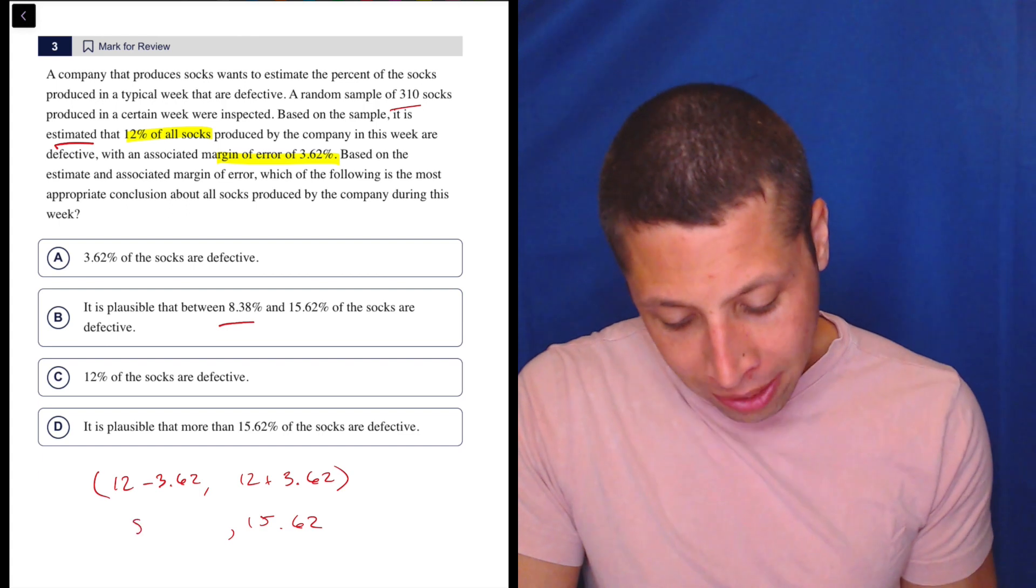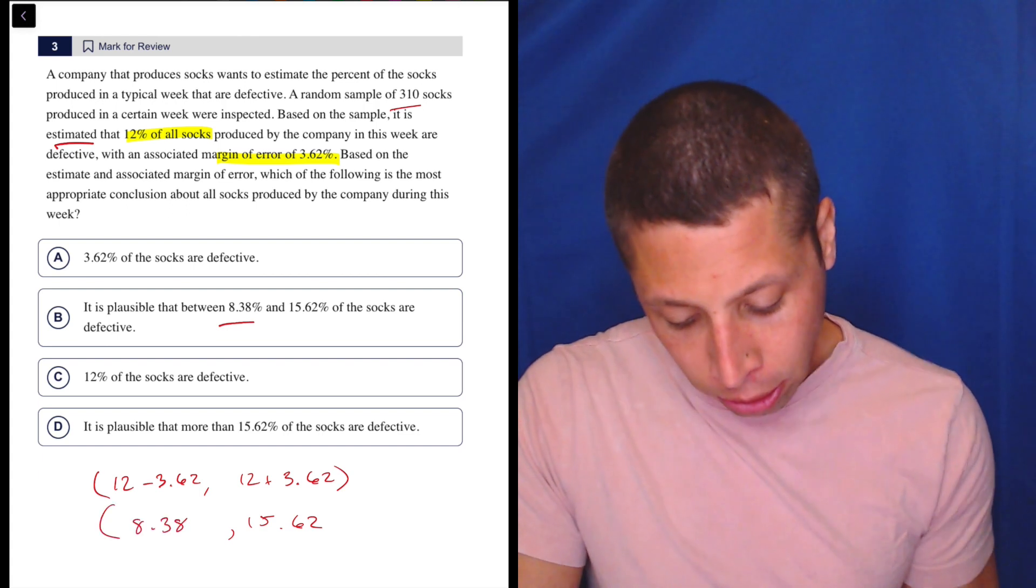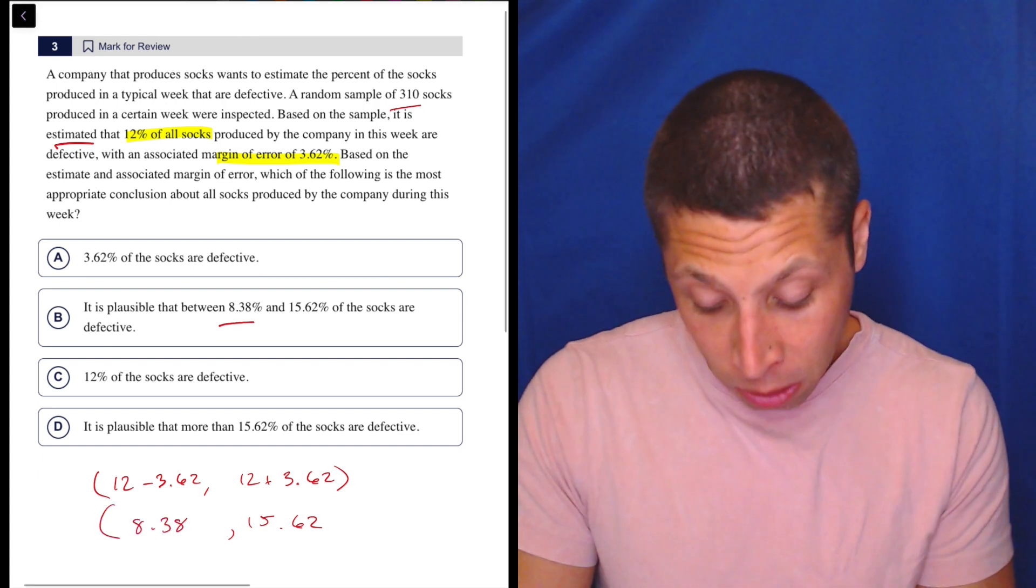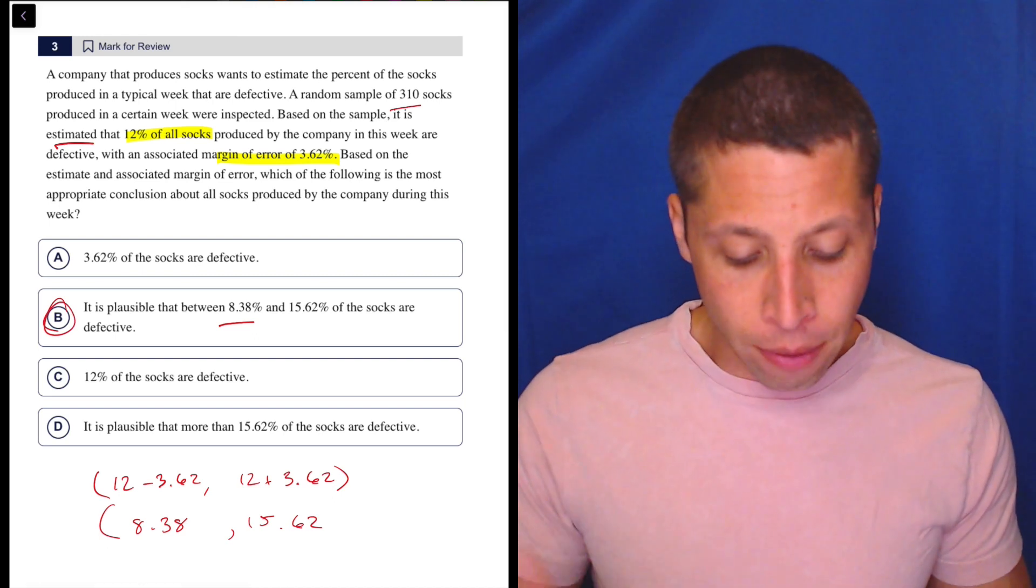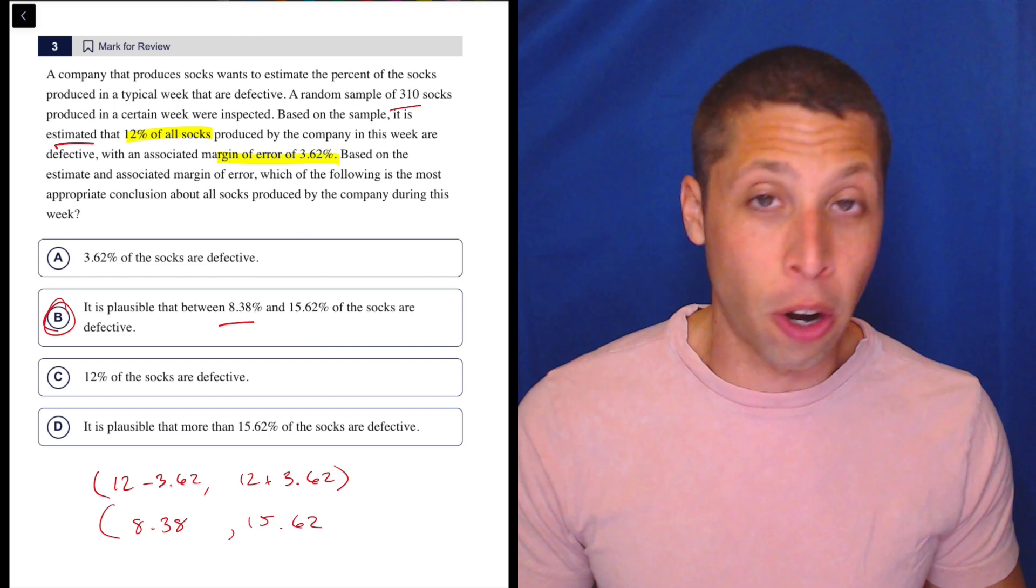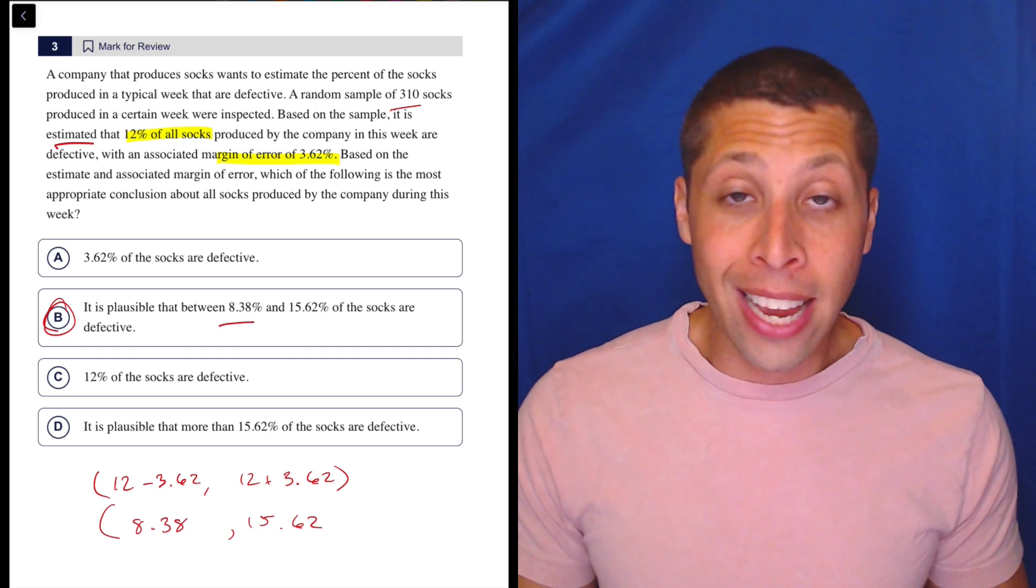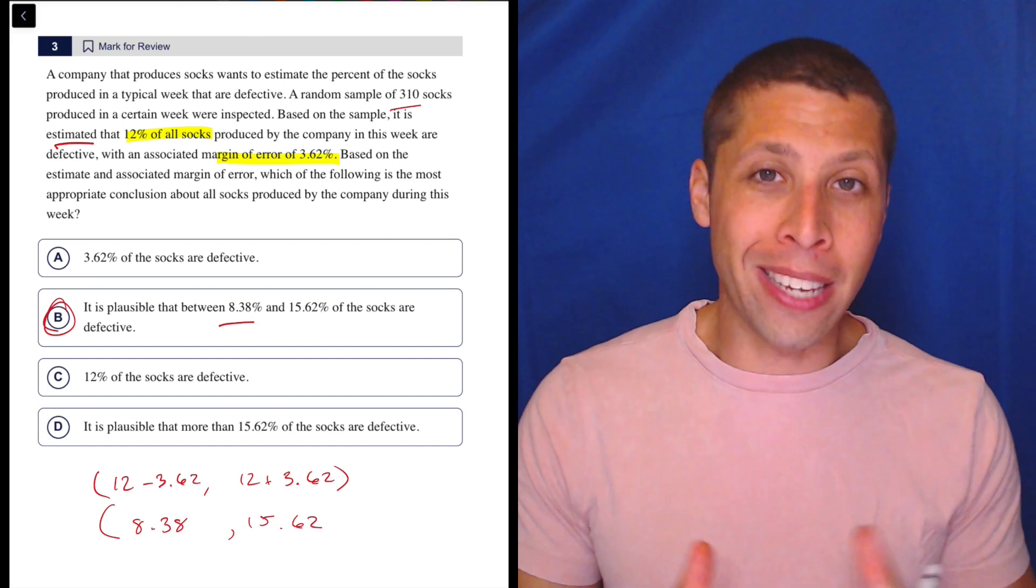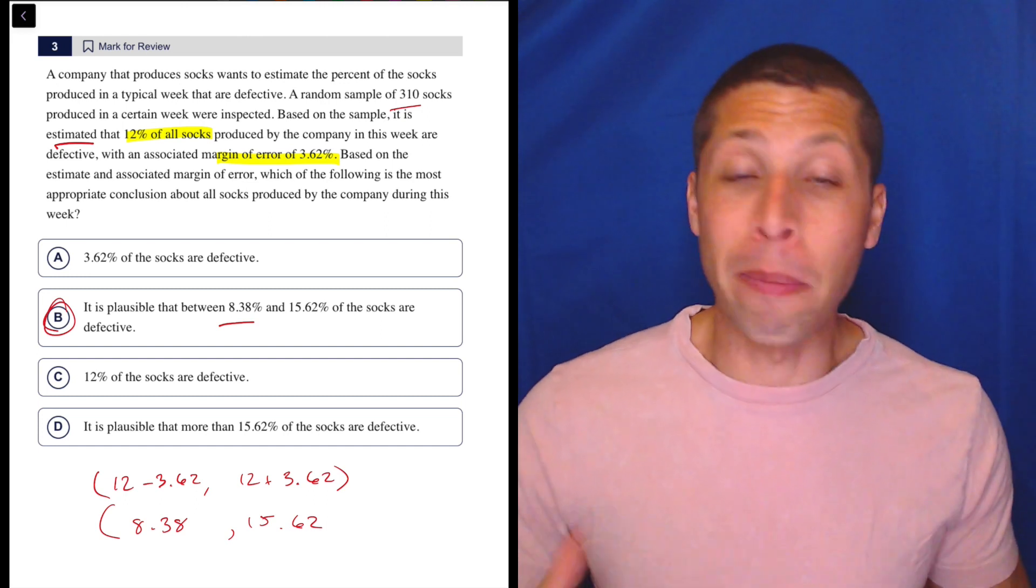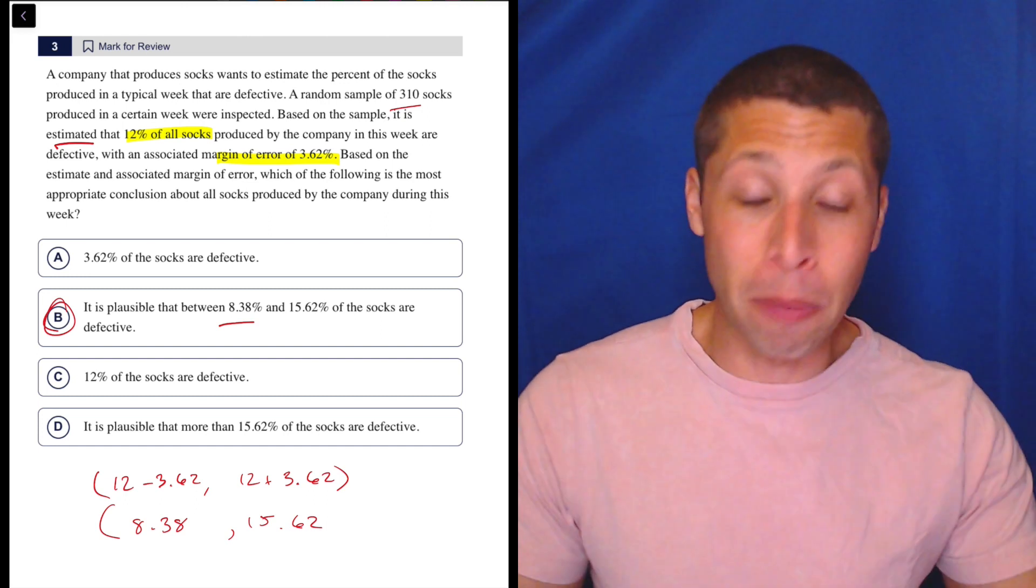This one, not so much, but I'm going to assume it's 8.38, and you could use the calculator if you needed to. And that is why choice B is correct. It is plausible that between 8.38% and 15.62% of the socks are defective. Notice it doesn't say it is certain because what these margin of errors usually do is give us like 95% certainty, but that still leaves room for it to be completely off.